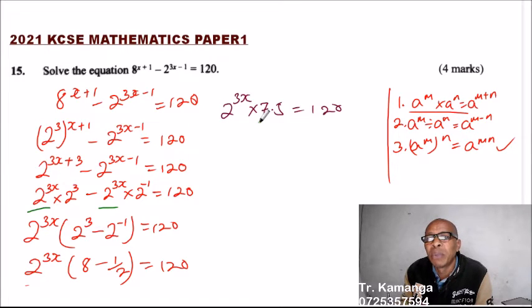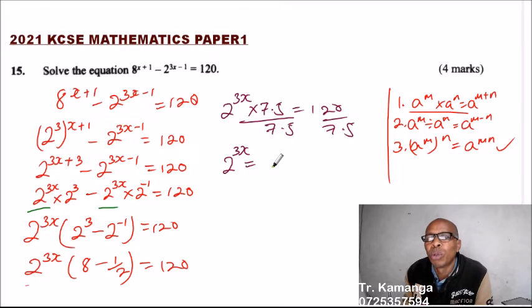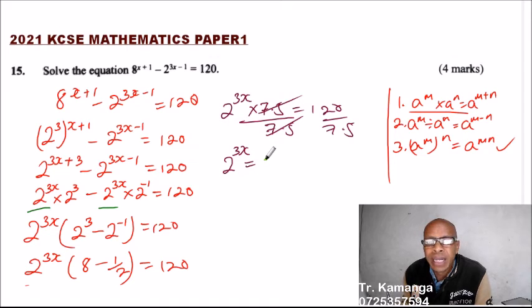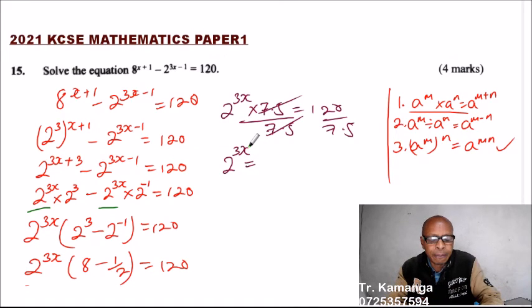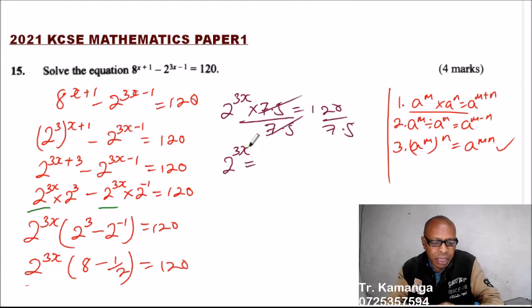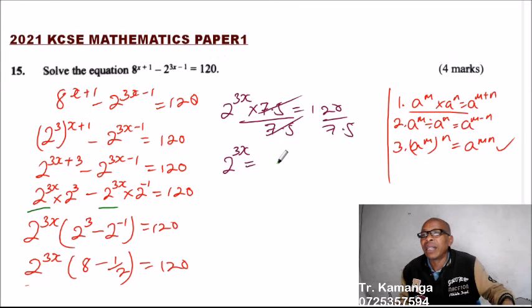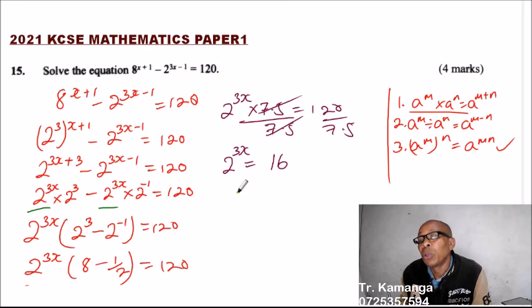We divide both sides by 7.5. 120 divided by 7.5 gives 16. So 2^(3x) equals 16, which we can write as 2^(3x) equals 2^4.